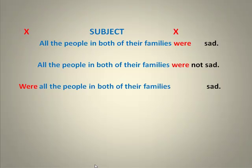The subject in the next example is pretty long, but we can find it the same way. We know that 'were' is an X word because when I move it to the front, I make a yes or no question. And we see that when the X word appears in these two different positions, the space between that place in the sentence is where the subject goes.